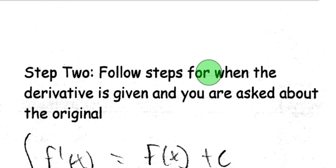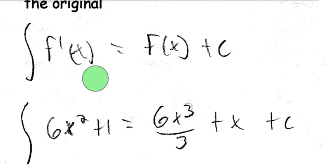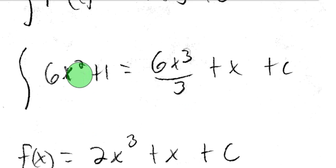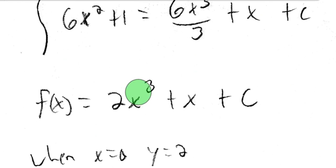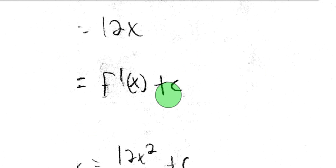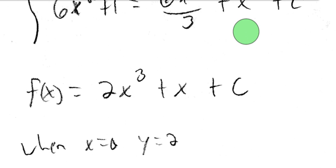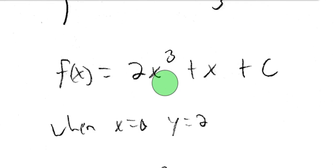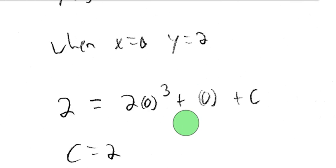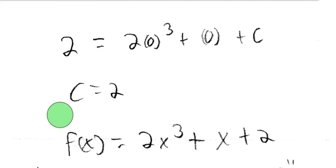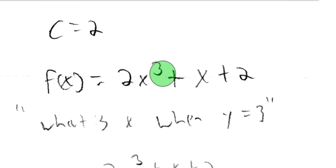Now let's go ahead and read step 2: follow the steps for when the derivative is given and you're asked about the original. Now that we have the first derivative, we can solve for the original. The antiderivative of the first derivative gives the original f of x plus c. The antiderivative of 6x squared plus 1 is 6x cubed over 3 plus x plus c, which gives 2x cubed plus x plus c. When x equals 0, y is 2 — that's the original — so the point is (0, 2). Plugging in 0 for x and 2 for y, we get c equals 2. So f of x equals 2x cubed plus x plus 2.